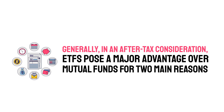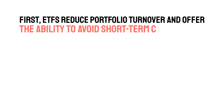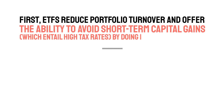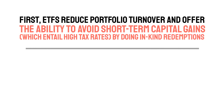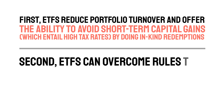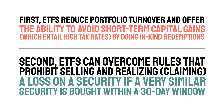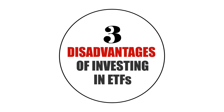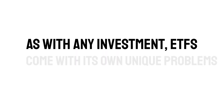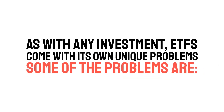Five: tax efficiency. Generally, in an after-tax consideration, ETFs pose a major advantage over mutual funds for two main reasons. First, ETFs reduce portfolio turnover and offer the ability to avoid short-term capital gains — which entail high tax rates — by doing in-kind redemptions. Second, ETFs can overcome rules that prohibit selling and claiming a loss on a security if a very similar security is bought within a 30-day window.